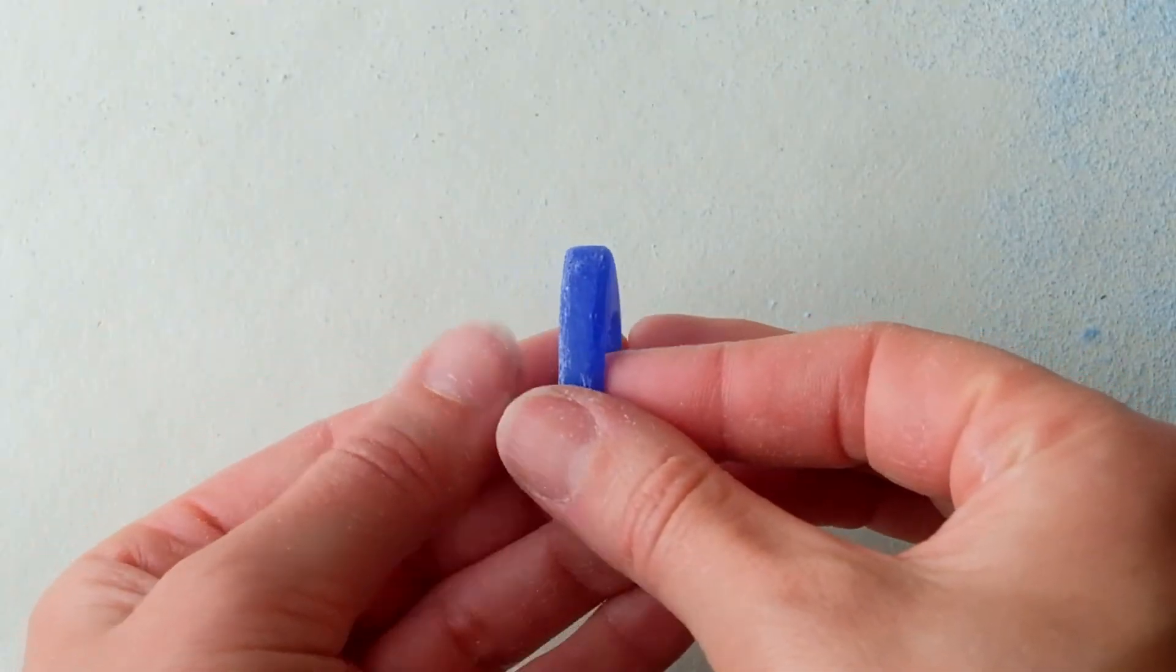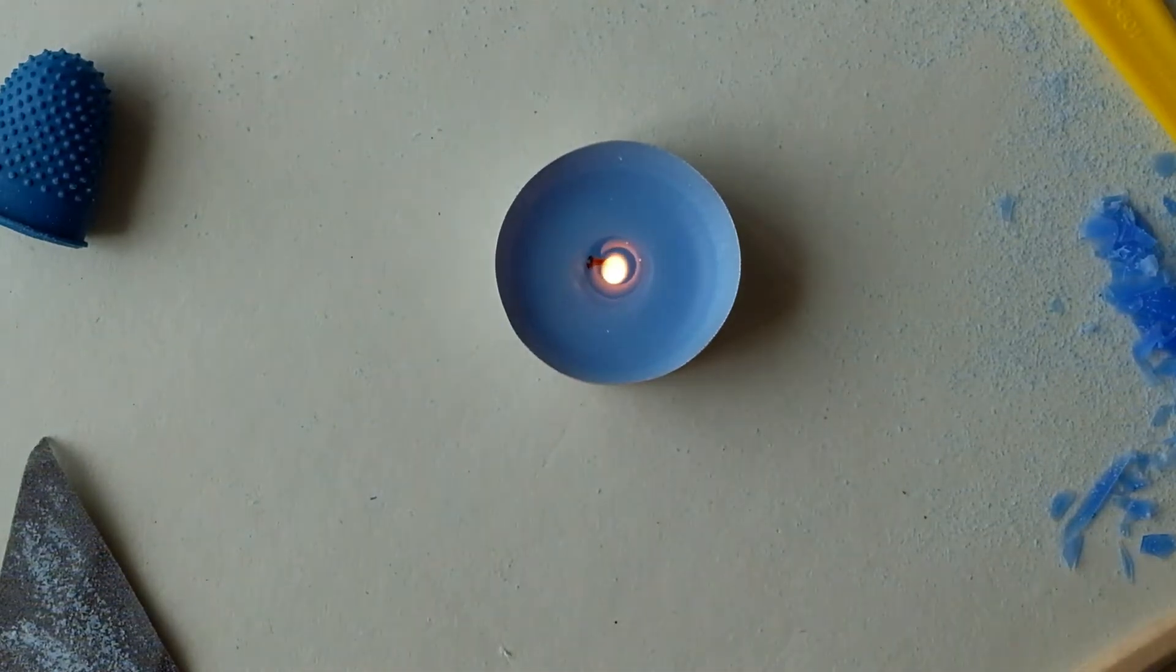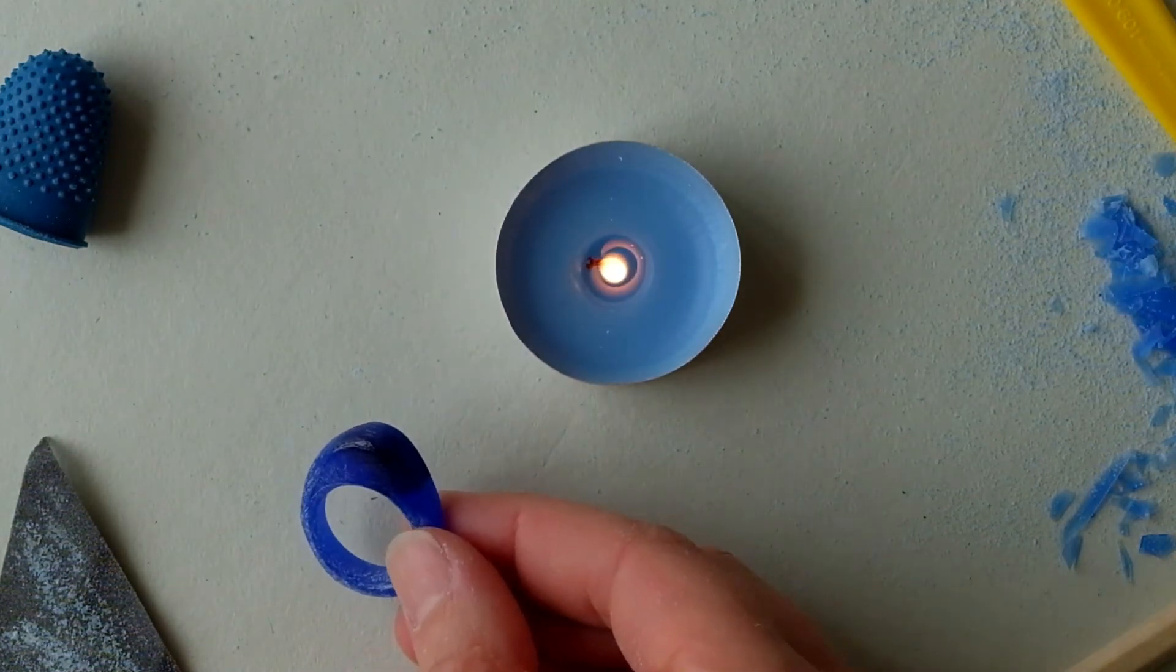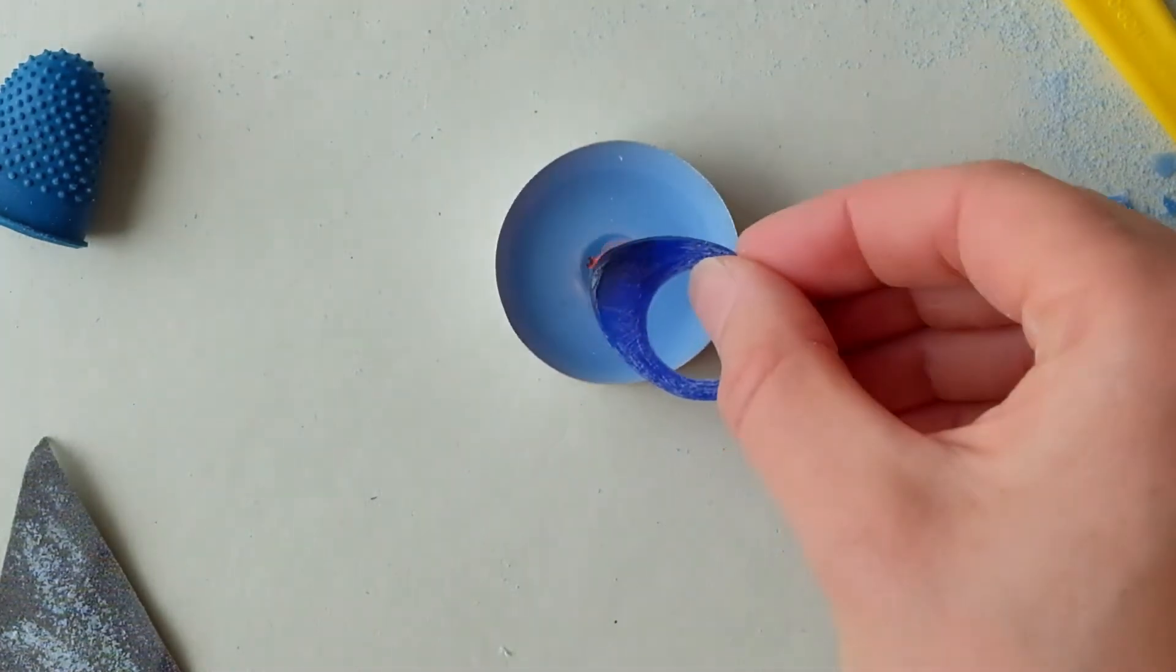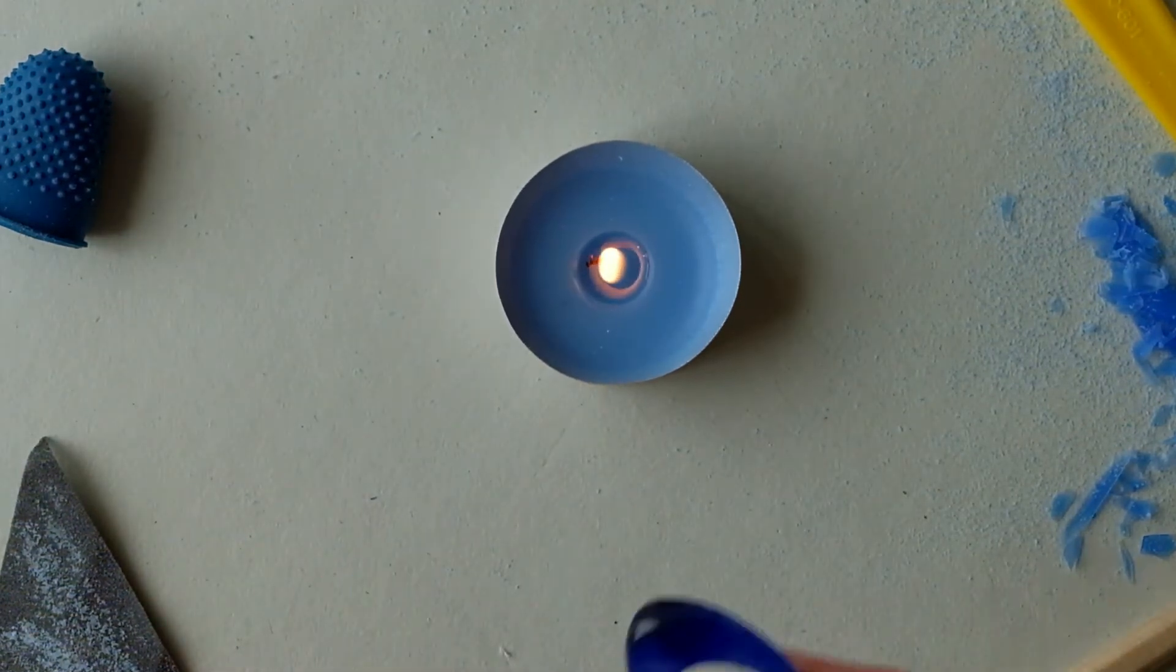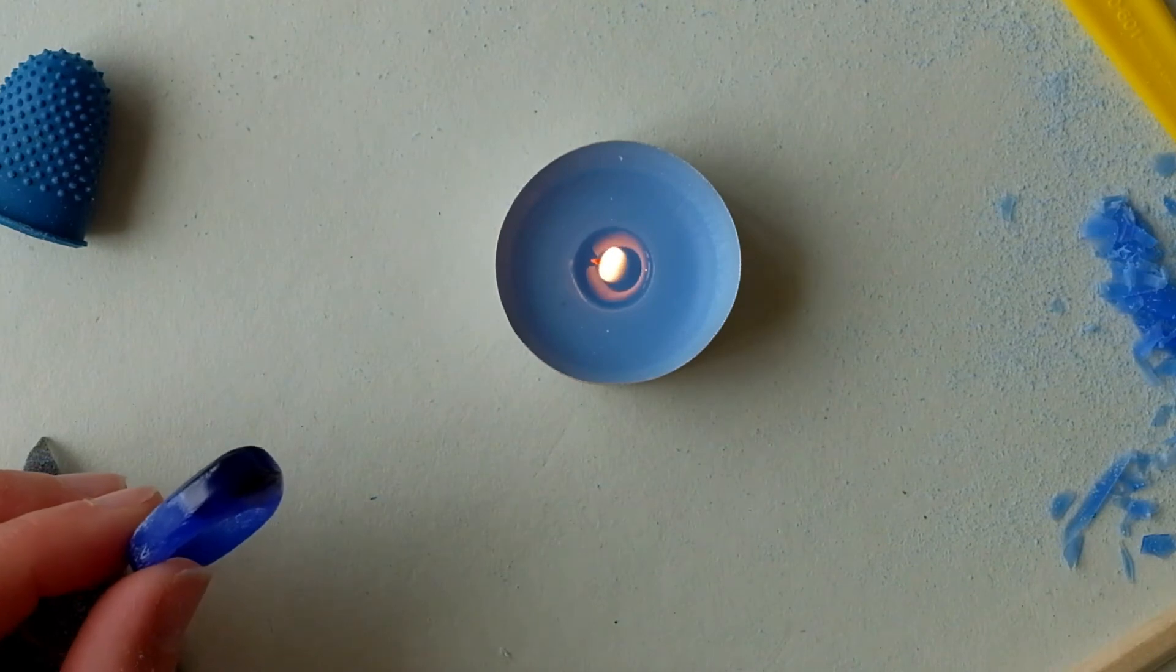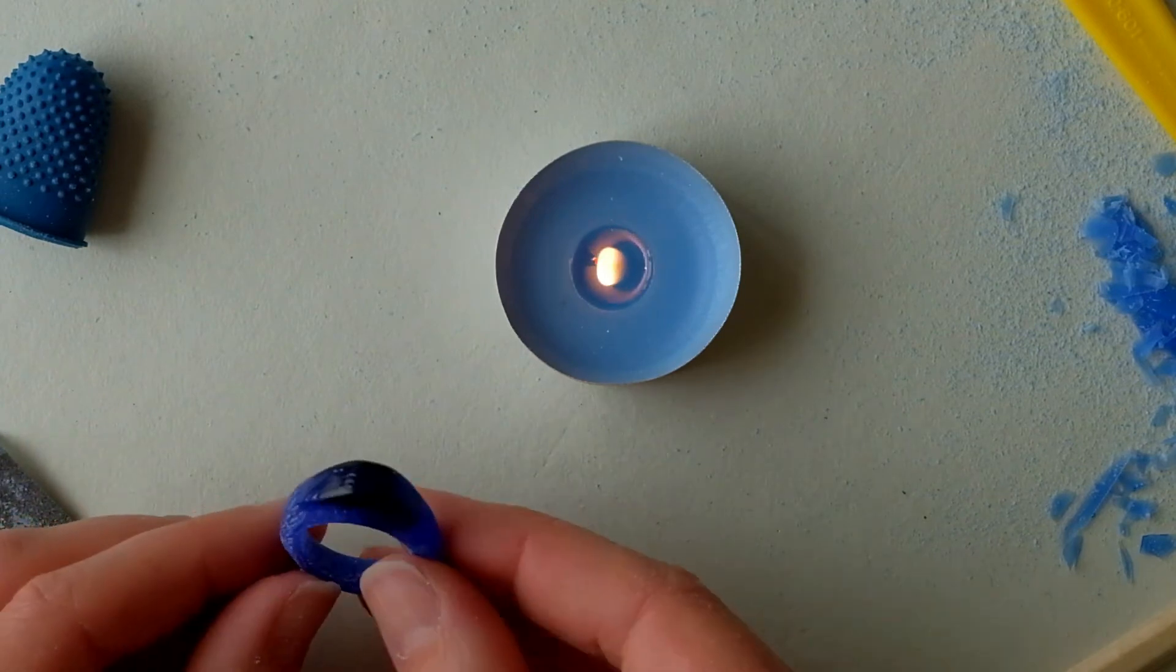And once you finish and you've got a lovely ring that's as smooth as you could possibly get it with your papers, we're going to take our candle and very quickly sweep the wax through the flame. And you want to wait in between each time you sweep a little bit for the wax to cool down, because otherwise you can really ruin your ring. So I've learned this by experience, so just take your time with this stage and eventually you should have a lovely smooth ring.